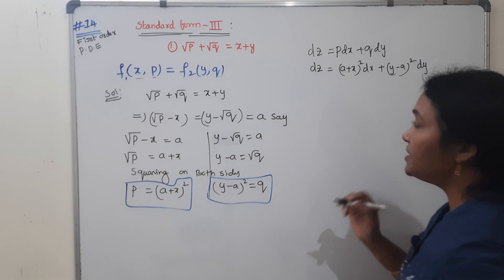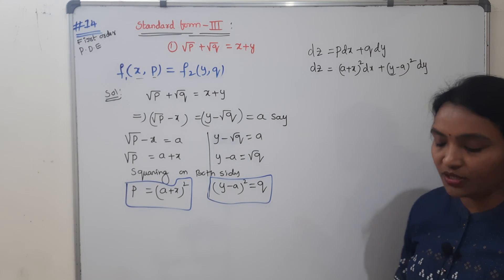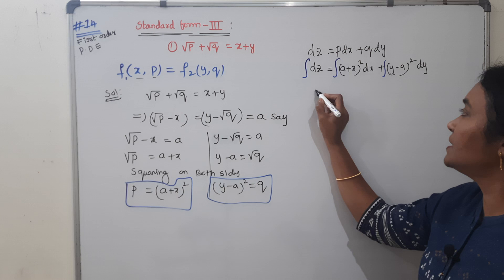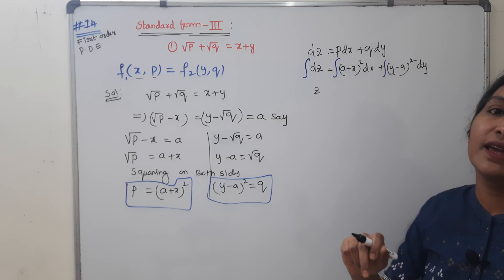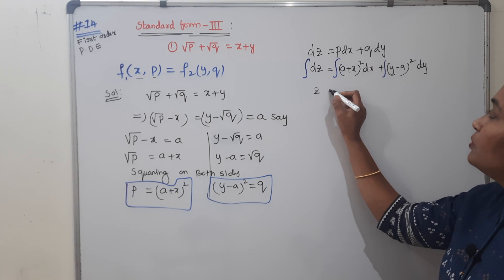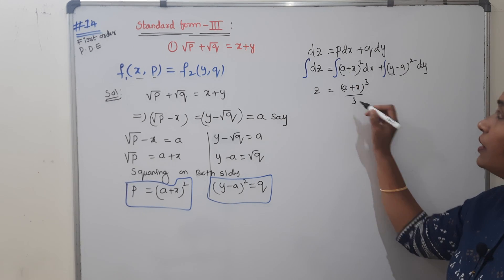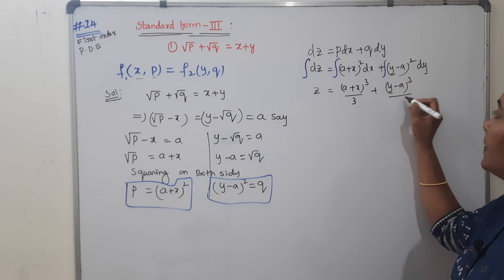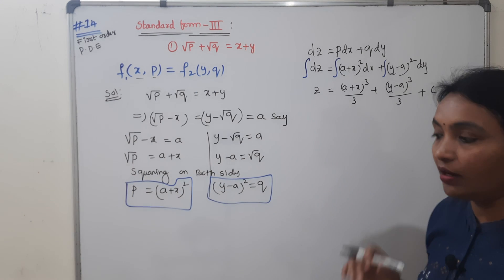After separating the terms, apply integration on both sides. Integral of DZ is Z. A plus X whole square integrates to (A plus X) whole cube by 3. And Y minus A whole cube by 3, plus C as the constant.